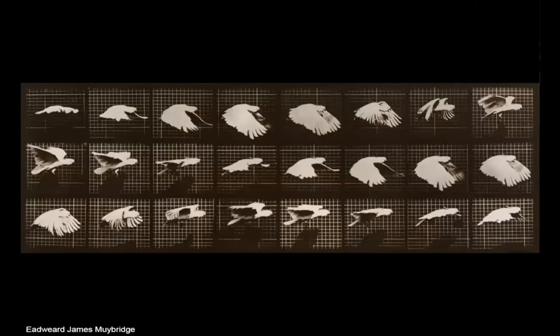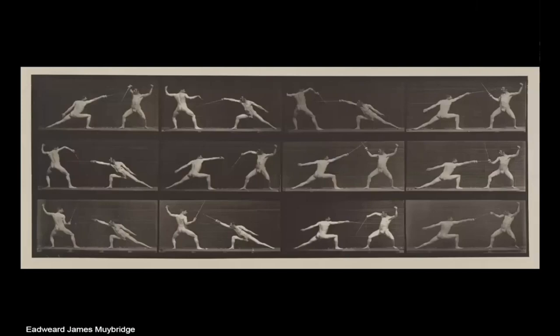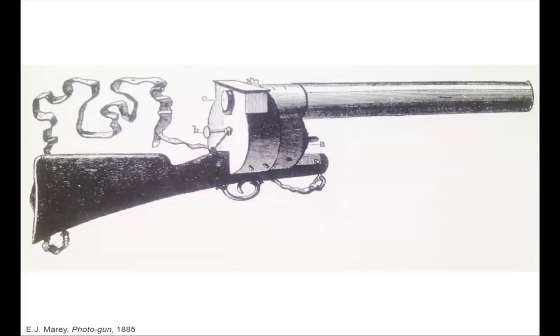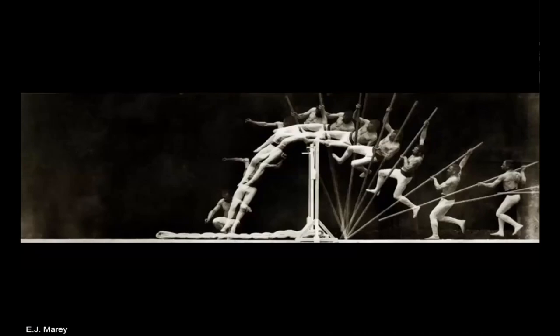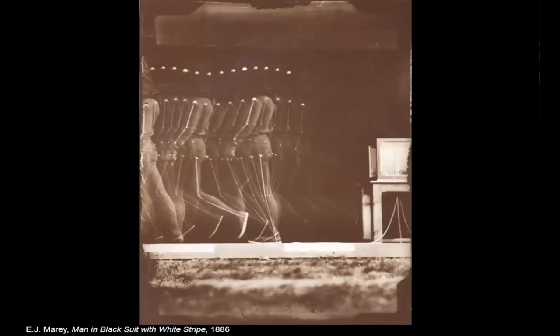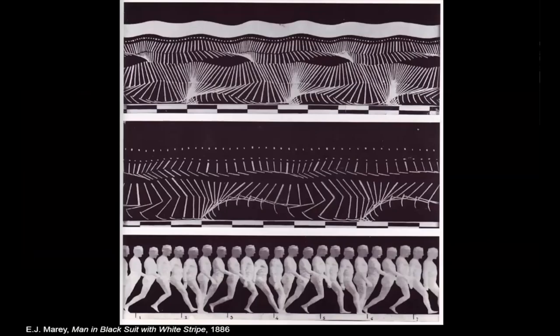Capturing what the human eye could not distinguish as separate movements. These are a cross-section of some of his work. Inspired by Muybridge, Marey also developed tools for capturing motion, including the invention of the photogun, which amplified his ability to catalog a body moving in space. With these, he created his hybrid drawings and photography, which became very influential in the idea of notation and cataloging movement of a moving body in space.